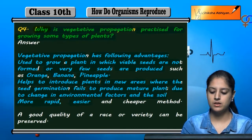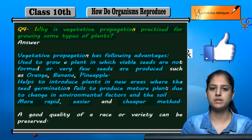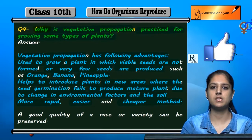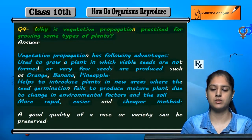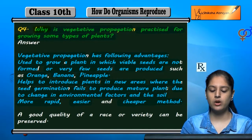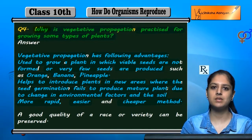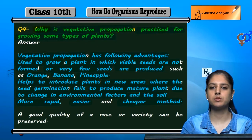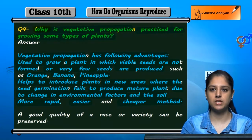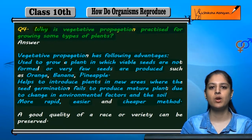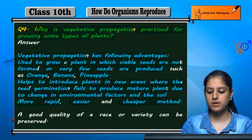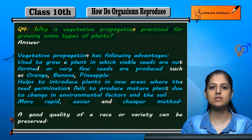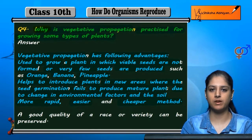Vegetative propagation is a more rapid, easier, and cheaper method. We can reproduce plants very quickly and easily. There are no complications or complexity, and the cost is very effective.